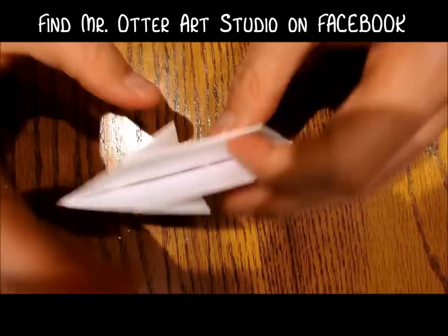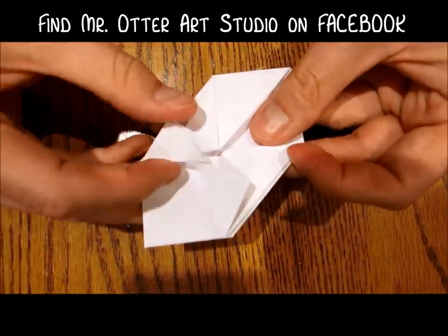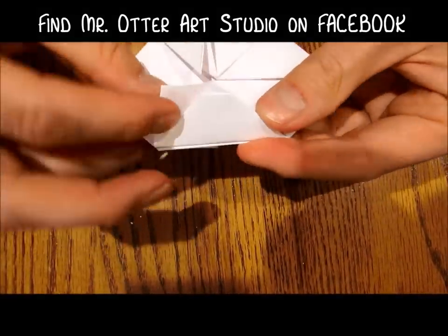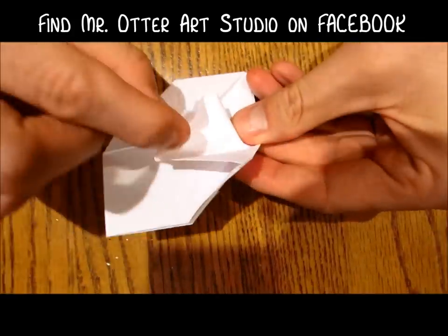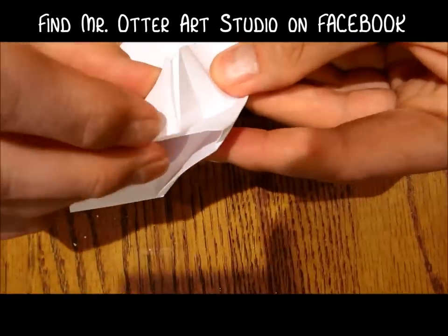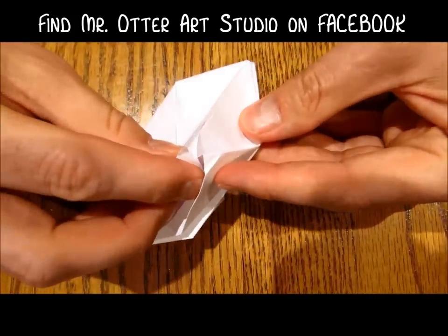Now we have four arrow flaps that are just hanging out right here and we're going to take them and just tuck them in. There's a little pocket right here. Just going to tuck them each into their own little pocket just like that.